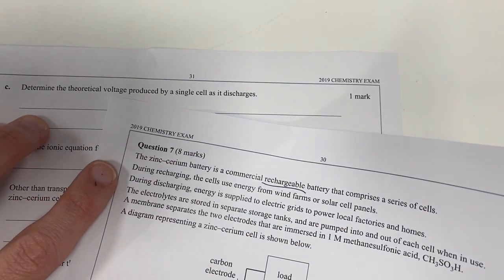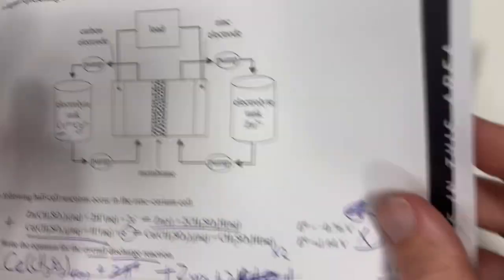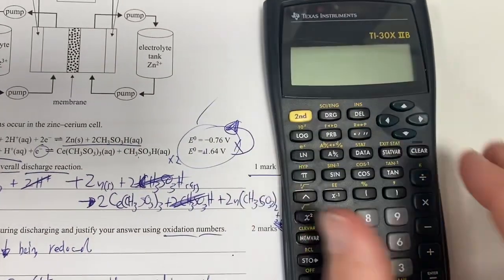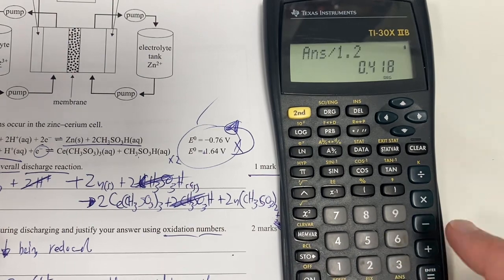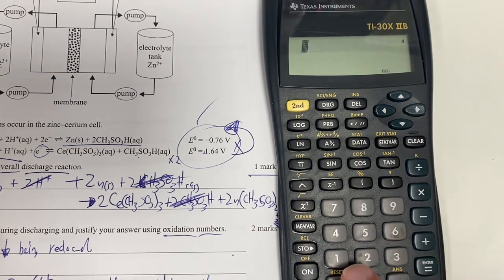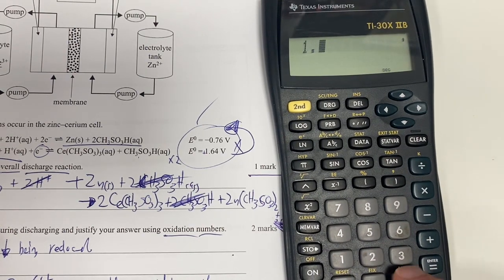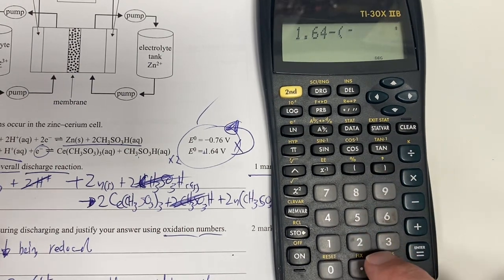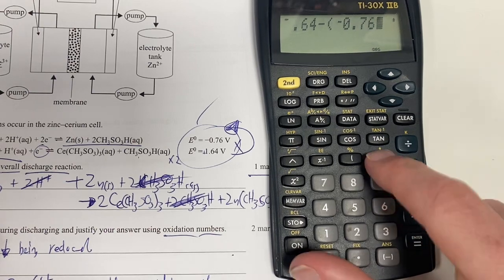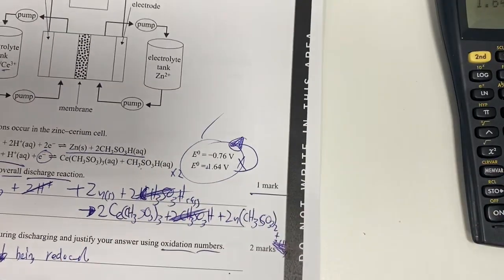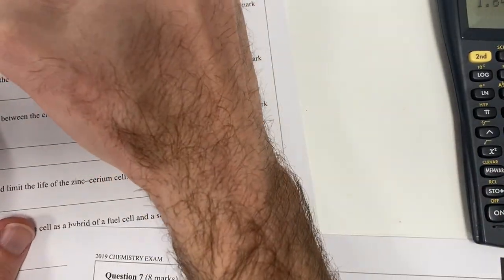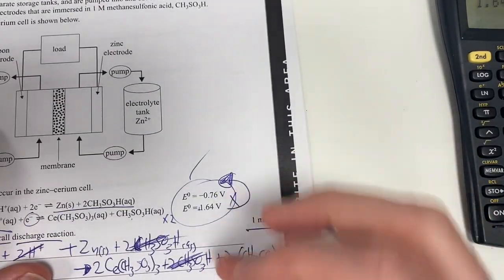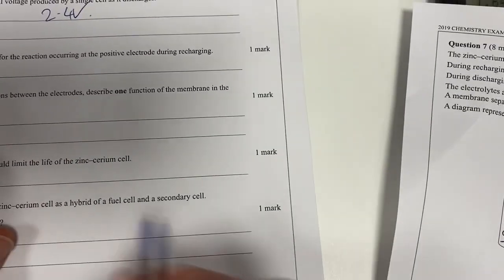Part C. Determine the theoretical voltage produced by a single cell as it discharges. That means I need to get the difference between these two numbers here. So therefore I'm going to say 1.64 take away (negative 0.6) is 2.4. So it's going to be 2.4 volts as it discharges. Because remember, voltage is the difference between our two numbers here.